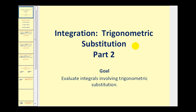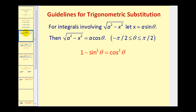Welcome to a second video on integration involving trigonometric substitution. Let's start off with a quick review from part one. If the integral involves the form √(a²-x²), we let x equal a·sin(θ), therefore √(a²-x²) will equal a·cos(θ). This is the form discussed in part one.